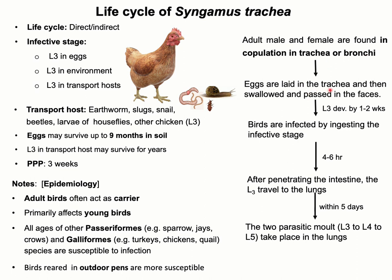Adult male and female parasites are found in copulation in the trachea and bronchi. The female parasite lays eggs in the trachea along with a lot of inflammatory exudates. The eggs are then coughed off, swallowed, and passed in the feces. Development to L3 in the environment takes around one to two weeks under optimum temperature and humidity. The final host — birds of different species — becomes infected by ingesting the infective stages. Afterwards, L3 penetrate the intestinal wall and reach the lungs, where molting from L3 to L4 and L4 to L5 occurs. Adults are found in the trachea, and the female parasite starts laying eggs. Completion of the life cycle takes around three weeks.